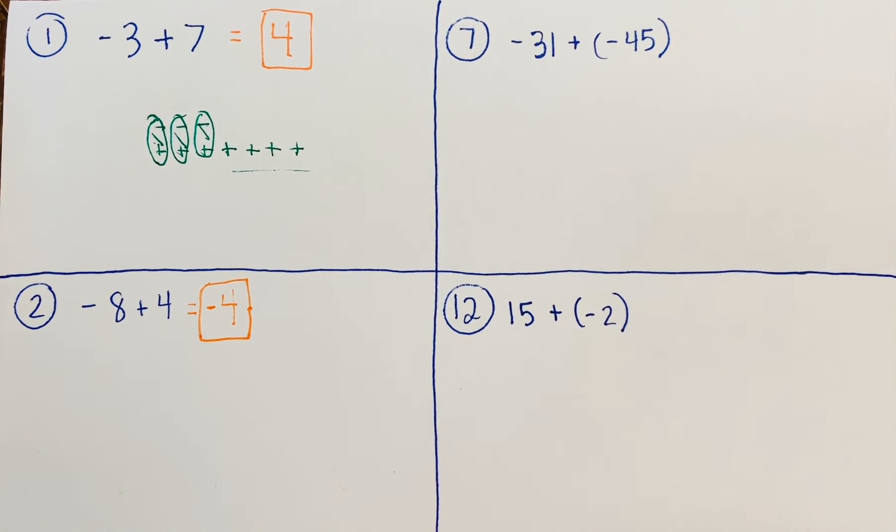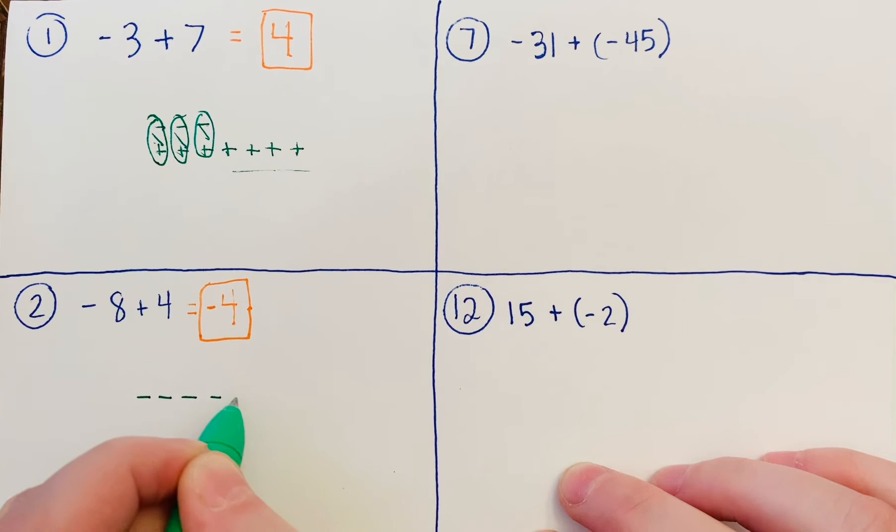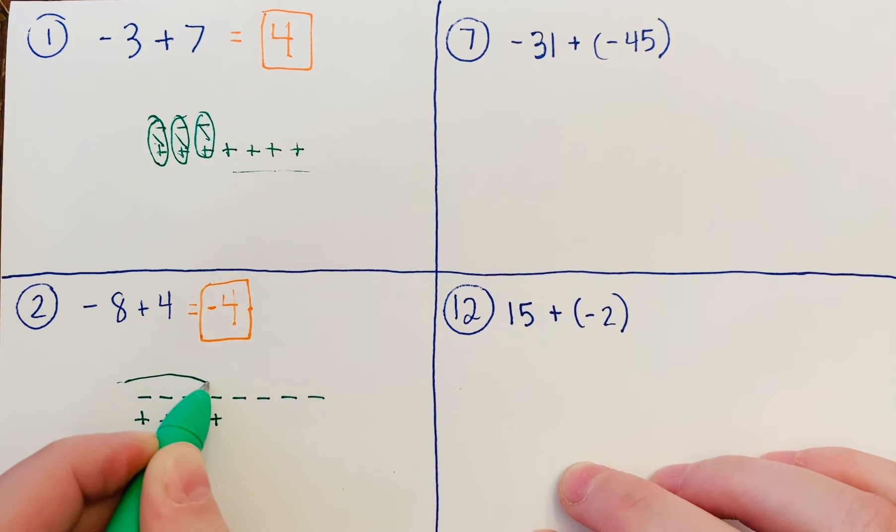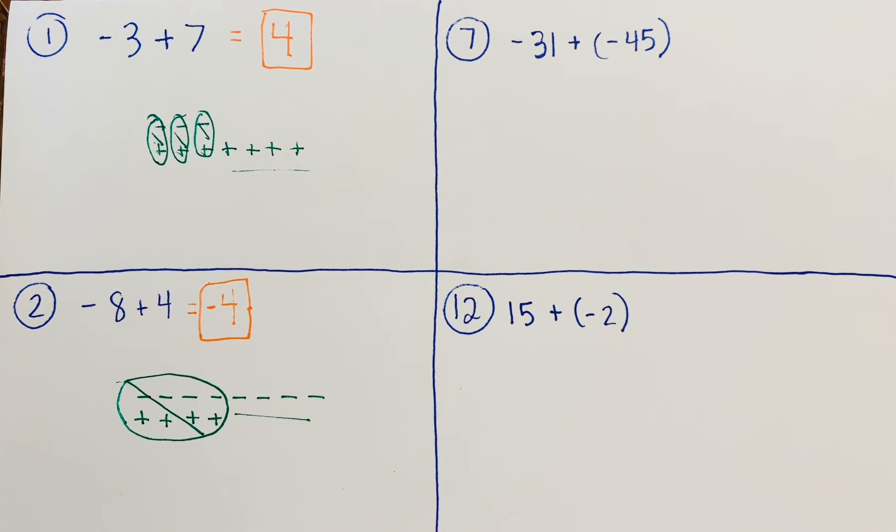You can draw out your picture if it's helpful: eight negatives, four positives. Circle all your zero pairs and you have four negatives left over.